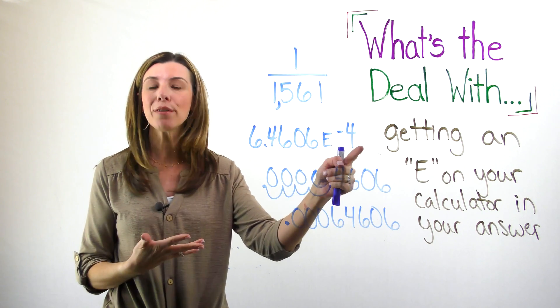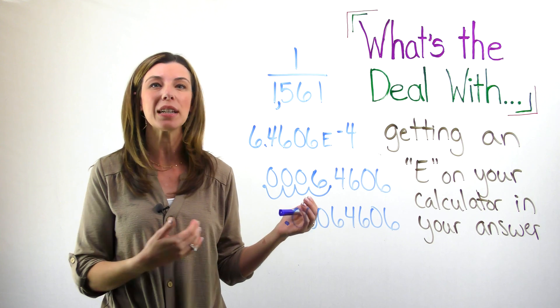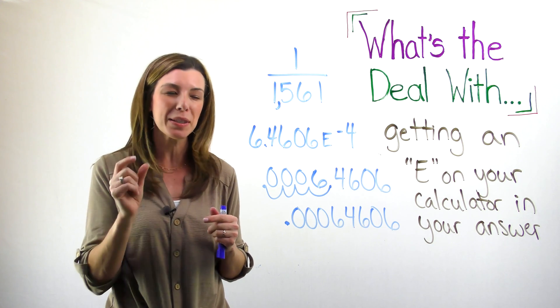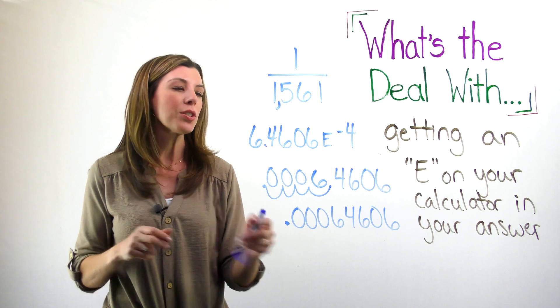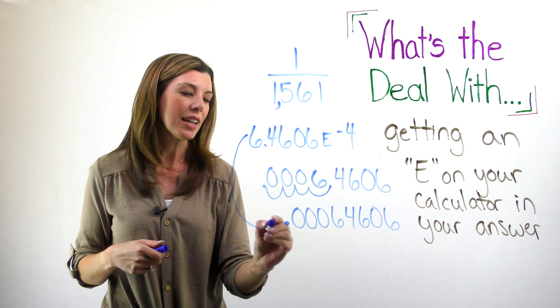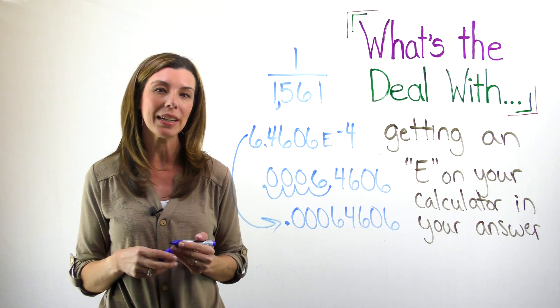when we see this E to the negative 4 on our calculator, it's telling us that the decimal is moving to the left and it's a very small number. You can see I've moved it over four spaces to the left so that I can see that this is the same as this decimal right here.